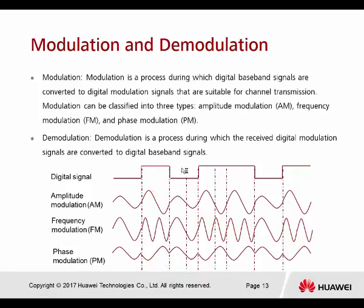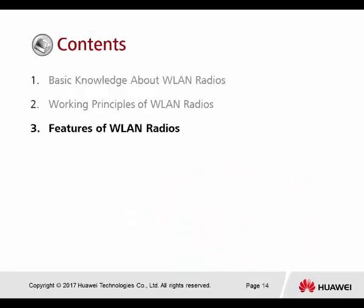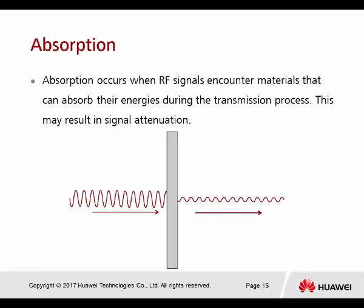The features of WLAN radios: first is absorption. Absorption occurs when a radio frequency signal encounters material that absorbs its energy during transmission, which may result in signal attenuation. The amplitude level decreases after passing through the obstacle, while the phase and size of the radio wave still maintain their original form — only the amplitude is affected.